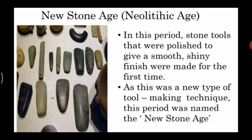The tools made in the new stone age were polished to give a smooth, shiny finish, and were made for the first time in this way. You can see in the picture that they were very smooth and shiny. As this was a new type of tool-making technique, this period was named the New Stone Age.